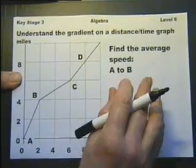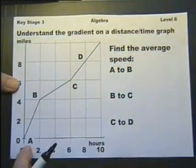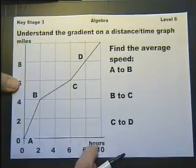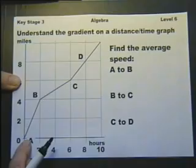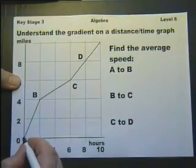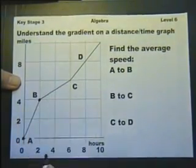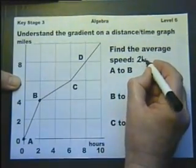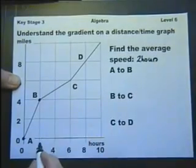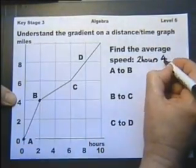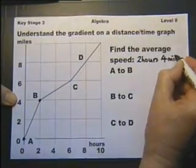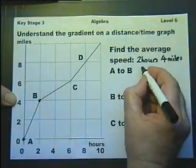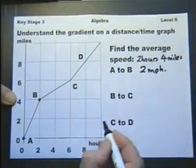Understanding the gradient on a distance-time graph. So here we've got a graph that shows distance in miles, time in hours. And the gradient means how steep. So let's look at going from A to B. A to B takes two hours and covers four miles. So in one hour it would be two miles. Therefore it must be two miles per hour.